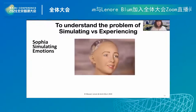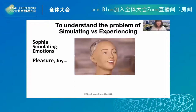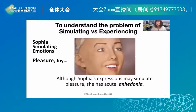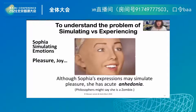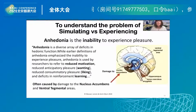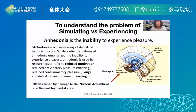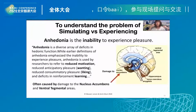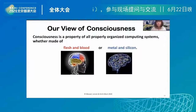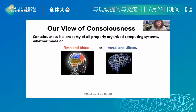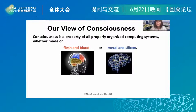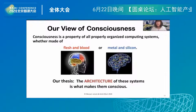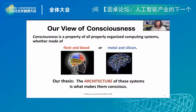Consider Sophia simulating emotions — she ends up appearing to show pleasure and joy. Although Sophia's expressions may simulate pleasure, she has acute anhedonia. Philosophers might say she's a zombie. Anhedonia in humans is the inability to experience pleasure — a diverse array of deficits in hedonic function, often caused by damage to the nucleus accumbens and ventral tegmental areas.